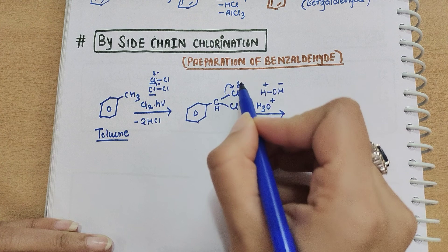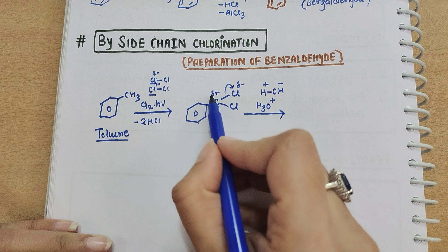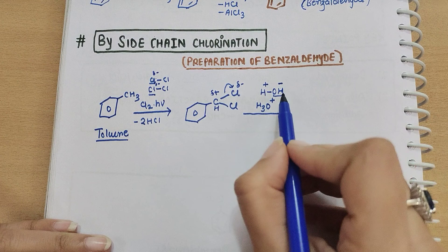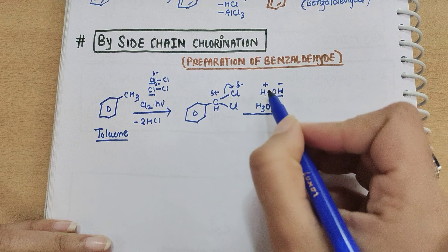If we take chlorine here, it creates delta negative and here delta positive. Opposite charge - OH negative will be attracted.